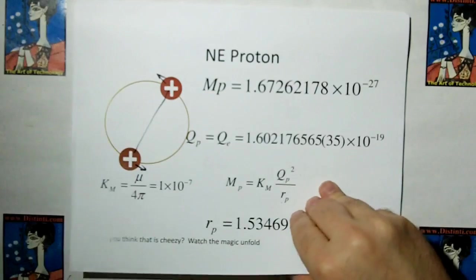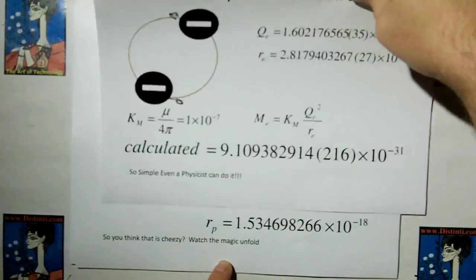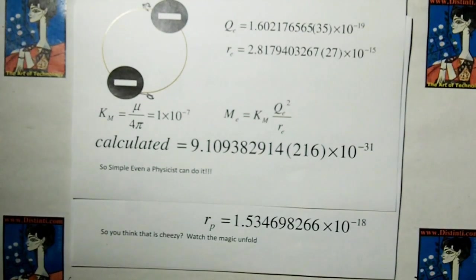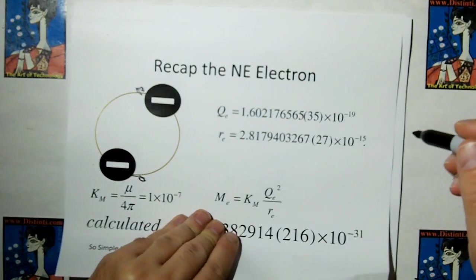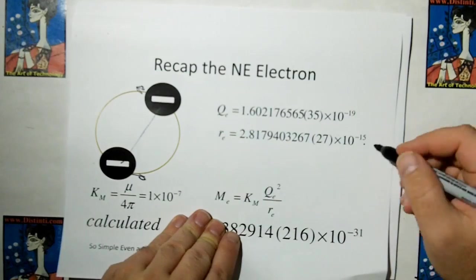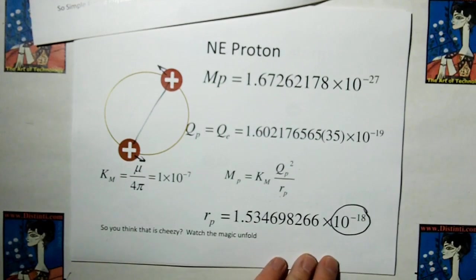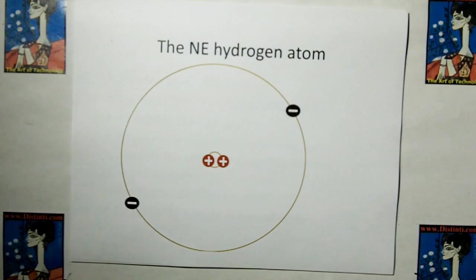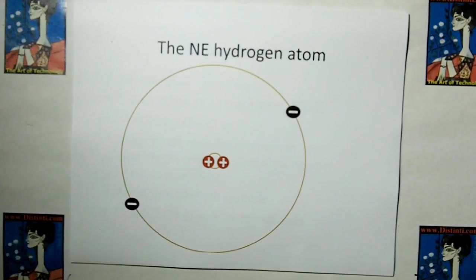This will knock your socks off. The electron has the radius of 2.8 times 10 to the minus 15, or the diameter rather, where the diameter of the new electromagnetism proton is times 10 to the minus 18, which means that the electron is about a thousand times bigger than the proton. A lot seems backwards, but let's see where this goes. Remember these are just gateway models.